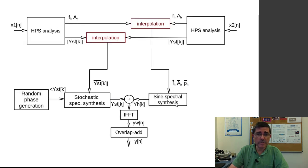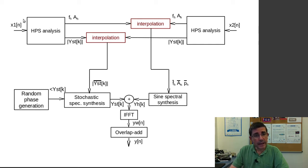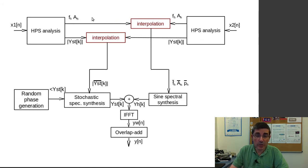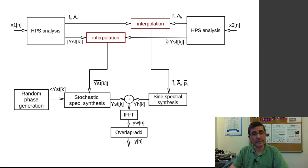One of these transformations is a little bit special, which is the morphing. The morphing requires two analyses of two sounds. So we have one sound that performs all these analyses and another one that does the same. We are basically interpolating these two sets of functions — the arrays of frequencies and amplitudes and the envelopes of the stochastic approximation — and then we do the synthesis in the same way.